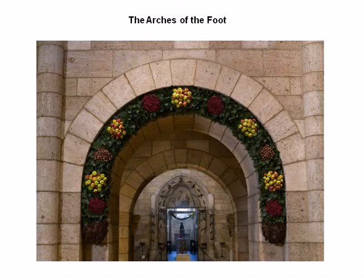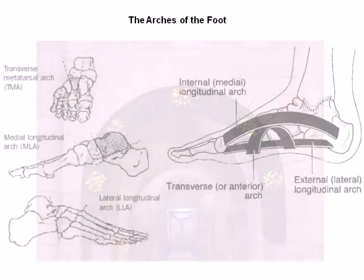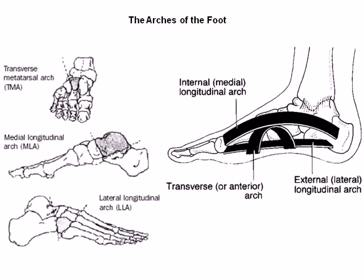As previously stated, the foot must be able to alternate between acting as a flexible and then a rigid rod. An arch is an architectural structure that, due to its geometry and the orientation of its component parts to one another, is able to bear a great amount of weight. The anatomy of the foot includes the incorporation of three different arches to better accept the forces of weight-bearing.